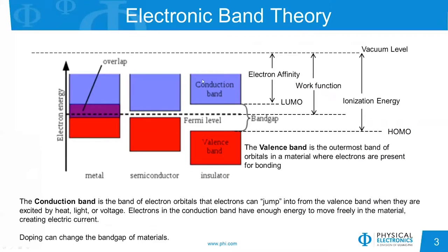So, electron band theory. We have a diagram here that shows some different molecular orbitals for materials. First, we see in red what is referred to as the valence band. This is the band of electron orbitals present in any material where the electrons typically reside and are available for bonding to other materials. There's another band referred to as the conduction band — a higher energy band of orbitals — and electrons from the valence band can be excited and jump up into this conduction band.